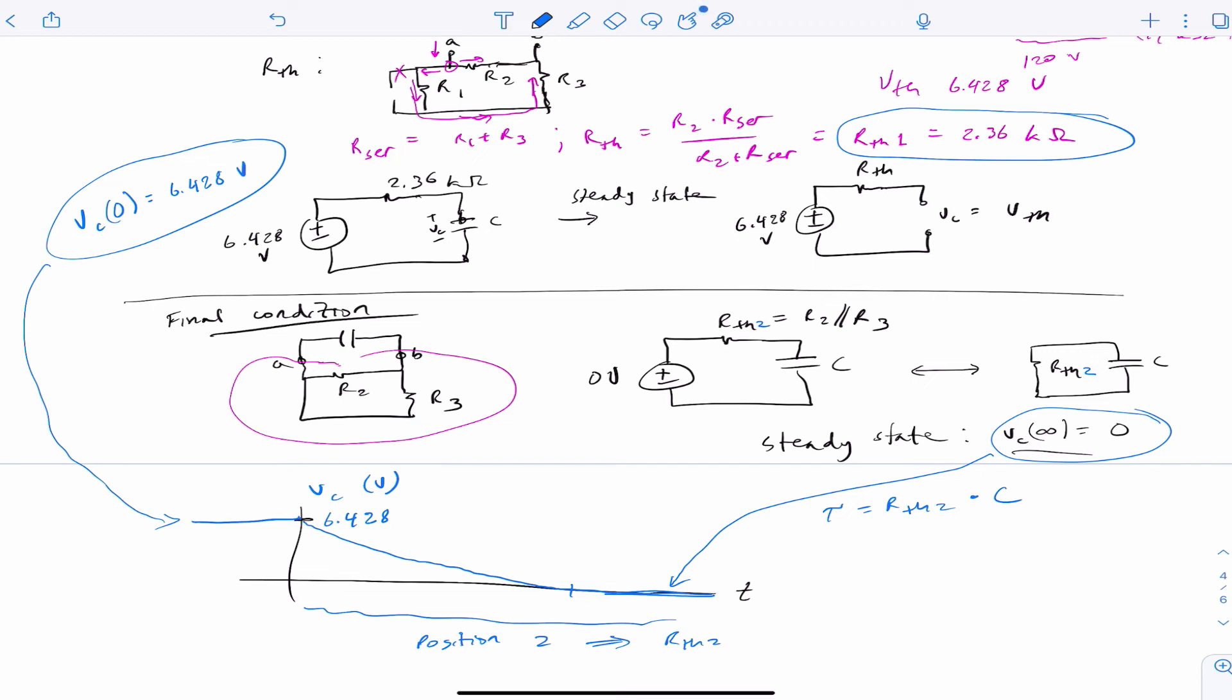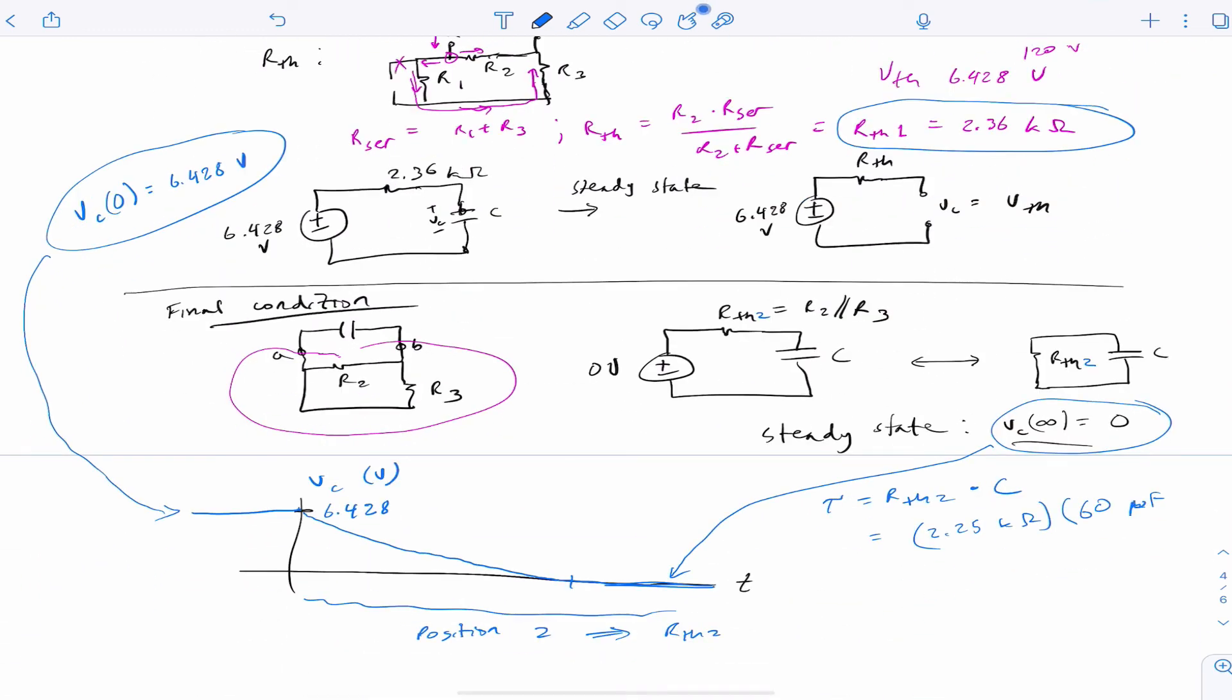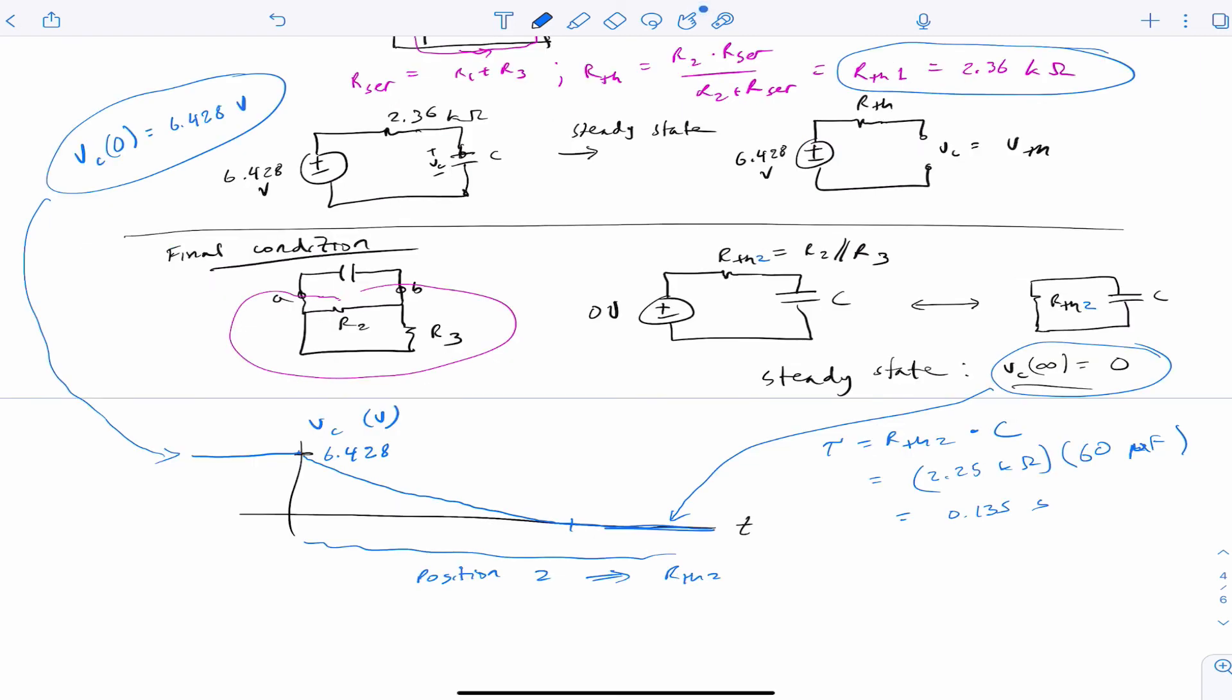Using the numbers that I gave you, I get R Thevenin 2 as 2.250 kiloohms. And then the capacitance, of course, is the 60 microfarads. When you multiply those together and then multiply that by 5, we'll say this is about 0.675 seconds.